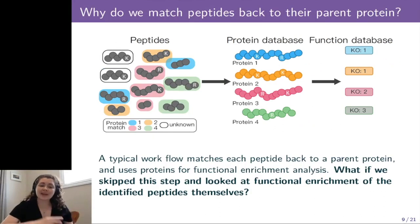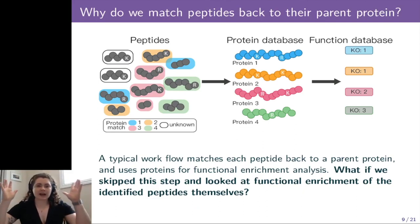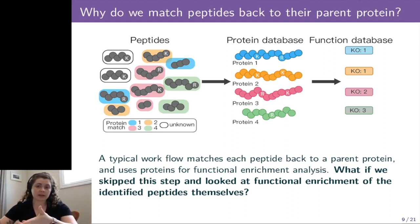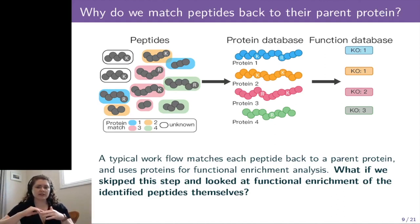A typical workflow matches each peptide back to a parent protein and then uses proteins for the functional enrichment analysis. But as you can see, there are peptides that we just can't match back to the parent proteins, and so it's really difficult to do functional enrichment on this type of data. So what if we just skipped this step and looked at the functional enrichment of the identified peptides themselves?